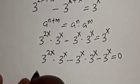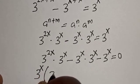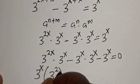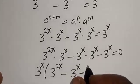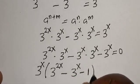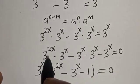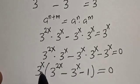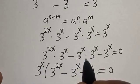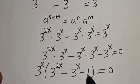Now let's factor out 3 raised to power x. We have 3 raised to power x in bracket: 3 raised to power 2x minus 3 raised to power x minus 1, is equal to zero. That is 3 raised to power x divided by itself gives 3 raised to power 2x, 3 raised to power x divided by itself gives 3 raised to power x, and 3 raised to power x divided by itself gives minus 1.